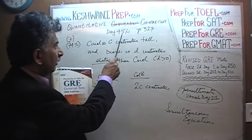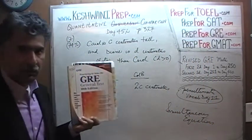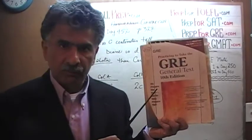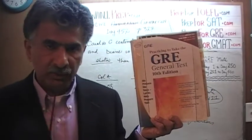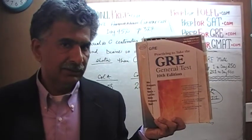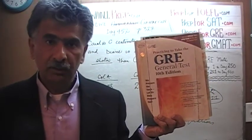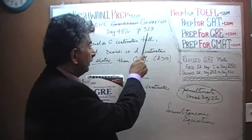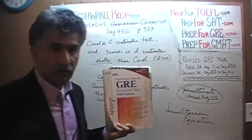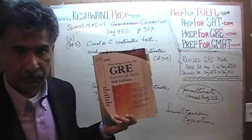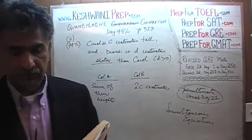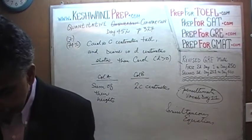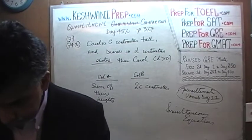For that reason, from day number 401 we began solving quantitative comparison questions out of this book — the 10th edition of the General GRE. We are right now on page number 327. Please turn to it — page number 327, problem number 7.